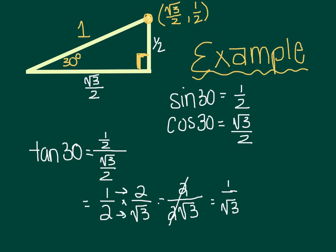Now this is a perfectly fine answer, except most of the world is going to want us to rationalize, I'll put this word here again, rationalize the denominator. So I multiply by a version of 1, square root of 3 over 3.